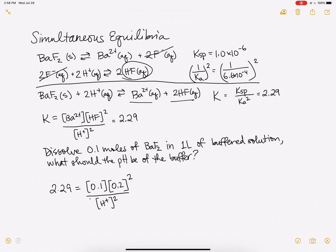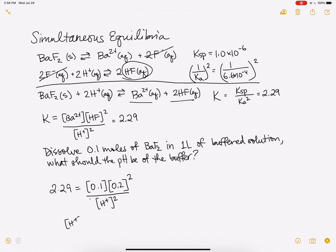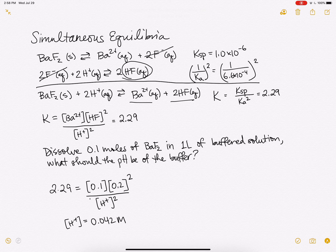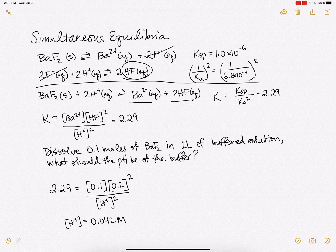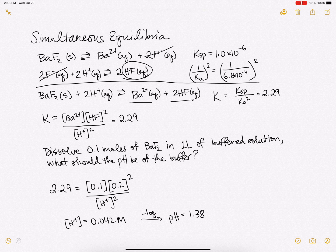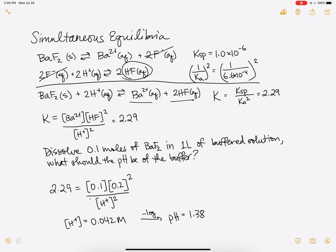So if we solve here, our H plus concentration will just be 0.042 molar. And we want to know what the pH is of that. So we take the negative log and we get our pH equals 1.38. So if we wanted to dissolve 0.1 moles of barium fluoride in one liter of a buffered solution, we would want to buffer with a pH of 1.38 in order to make that dissolve.